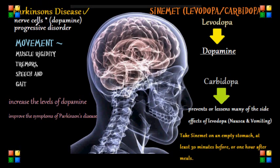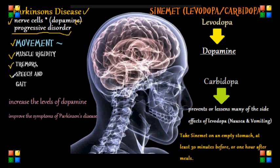With Parkinson's disease, it mainly affects the nerve cells in the brain, specifically the nerve cells that produce dopamine. We call Parkinson's disease a progressive disorder of the nervous system, and it mostly affects movement. Our main symptoms would be related to our patient's movement, such as muscle rigidity, tremors, some changes in speech which is what we call aphasia, and it also affects the gait or walking.